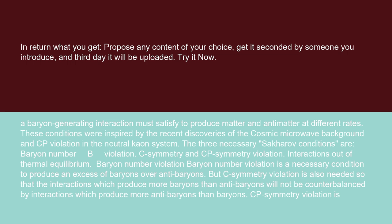Baryon number violation is a necessary condition to produce an excess of baryons over antibaryons. But C-symmetry violation is also needed, so that the interactions which produce more baryons than antibaryons will not be counterbalanced by interactions which produce more antibaryons than baryons.